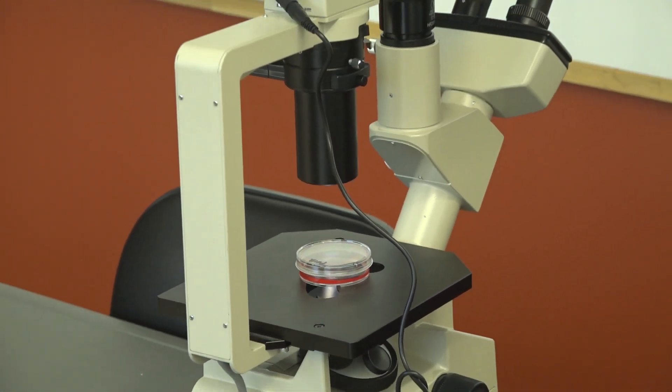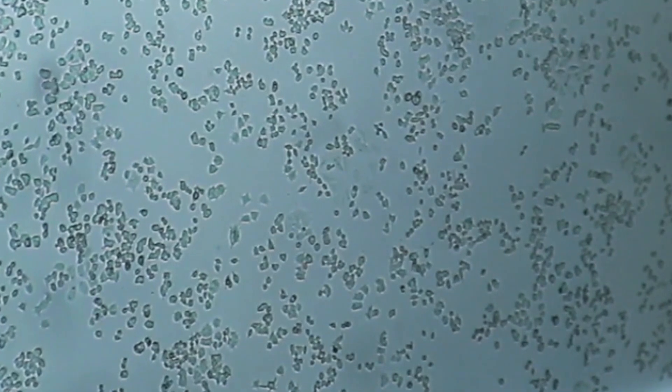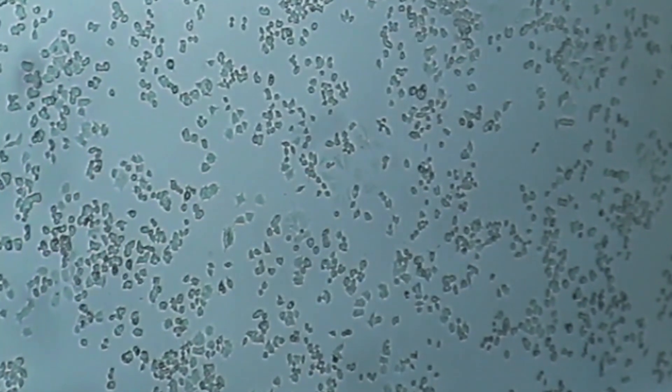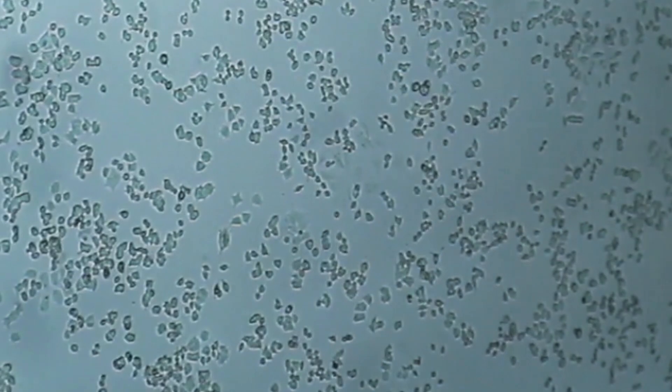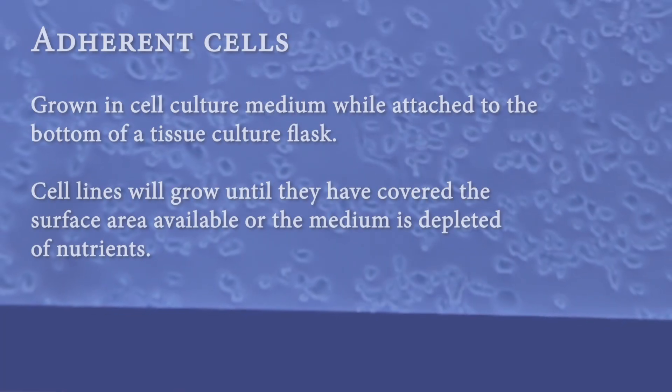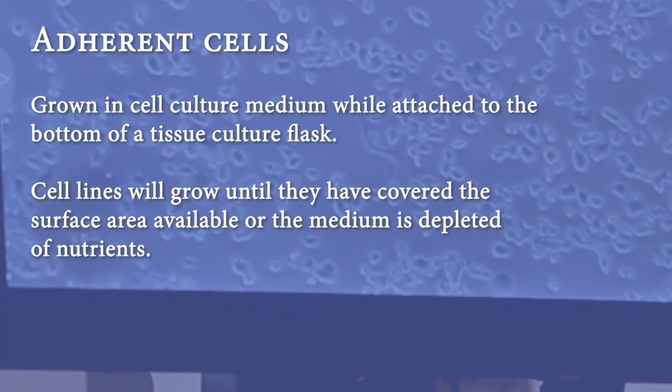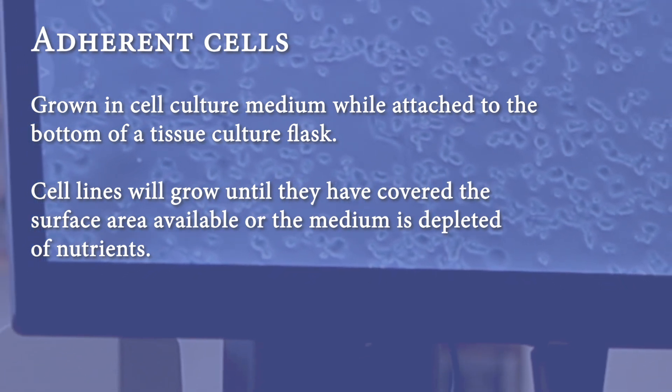As you can see PC12 cells are small in size and sort of have irregular shape. It's also worth noting that these cells adhere to the bottom of the culture dish. Cells like these are called adherent cells.